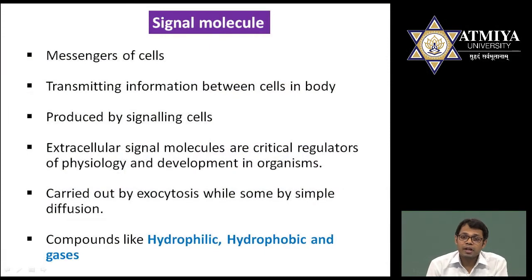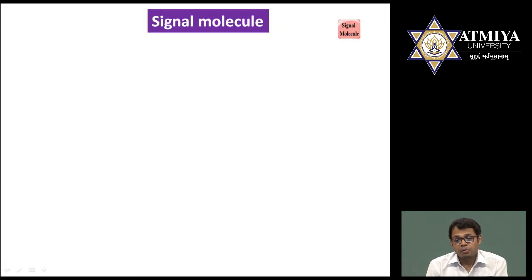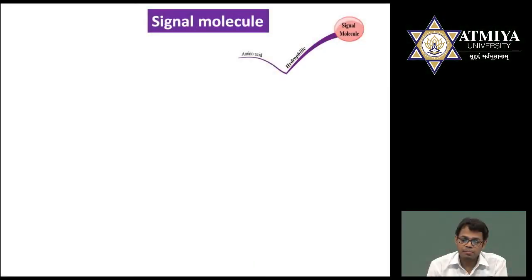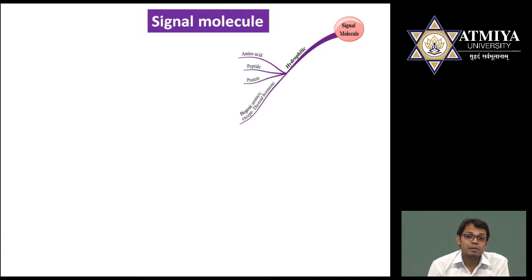Signal molecules may be hydrophilic, hydrophobic, or gaseous. Hydrophilic molecules are polar in nature. Let's look at the different types. Hydrophilic signal molecules may be amino acids, peptides, proteins, or biogenic amines. The common feature of all these is they all have amino groups and are polar in nature. However, thyroid hormone is one exception — it is not hydrophilic but is a hydrophobic molecule. The second type is gaseous molecules: nitric oxide and carbon monoxide. The third type is hydrophobic molecules: steroids, thyroxine, and retinoids.